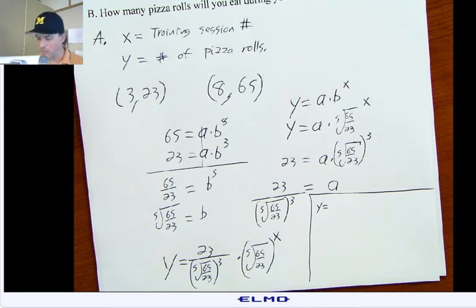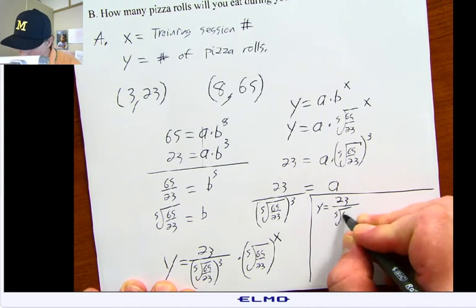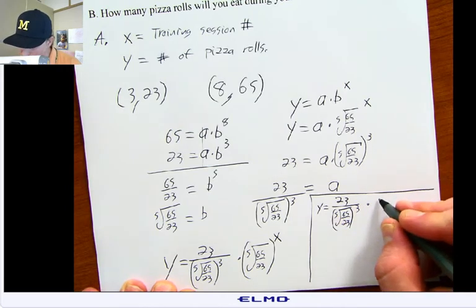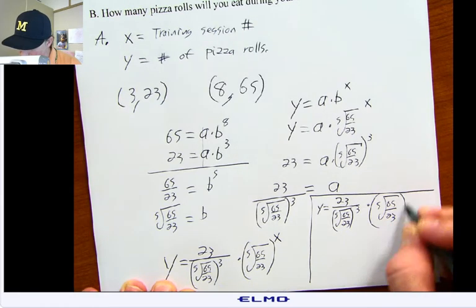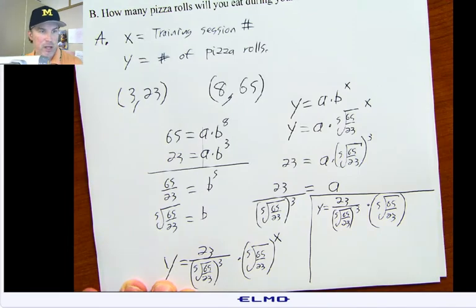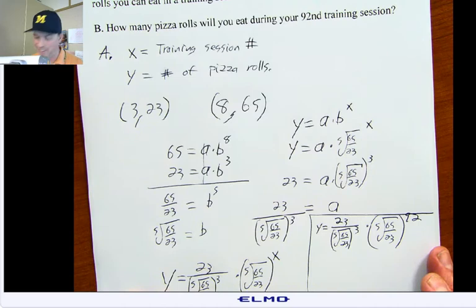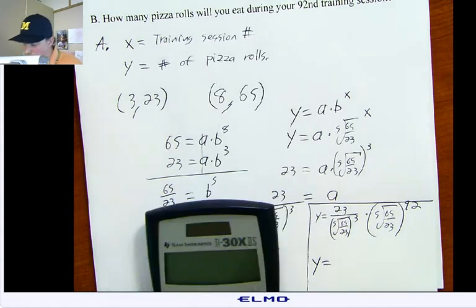Do I want to use it yet? I'm debating right now what the best way of handling this is. I think as your math teacher, it's probably best to keep the exact. So I have 23 over the 5th root of 65 over 23, all of that cubed, times the 5th root of 65 over 23, raised to the power of 92. Now, this is a calculator problem.